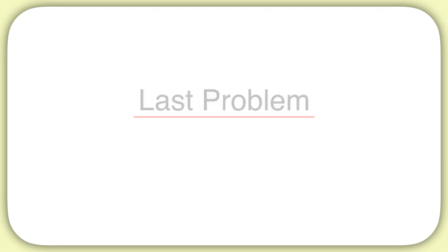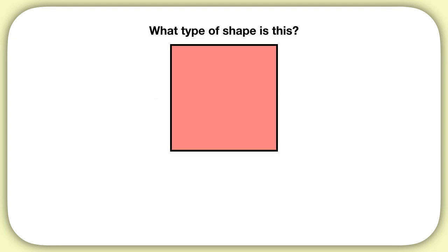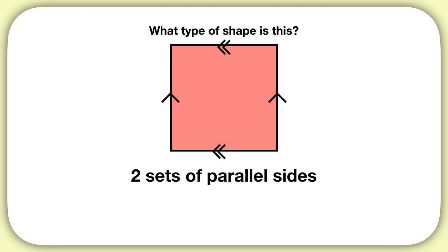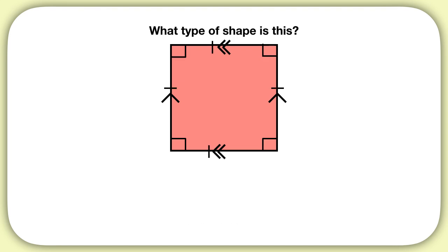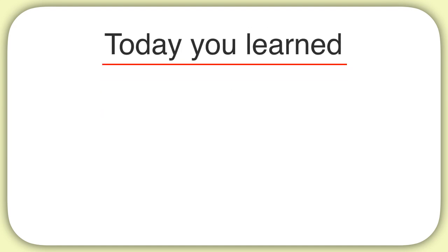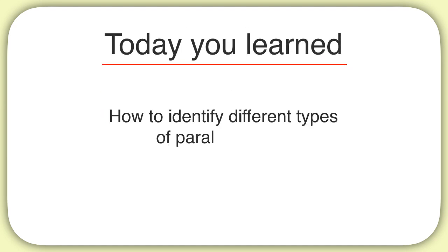Here's your last problem for this video. What type of shape is this? This shape has two sets of parallel sides, here and here. It has four right angles and all of the sides are equal length. That means this shape is a square. Today you learned how to identify different types of parallelograms.